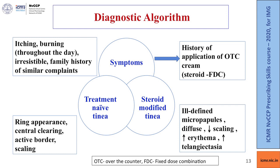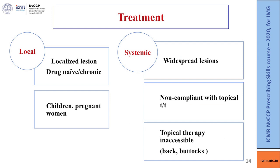If there is a history of application of an over-the-counter FDC containing steroid with antifungal drug, and lesions are ill-defined micropapules, diffuse with decreased scaling and increased erythema or telangiectasia, the diagnosis is steroid-modified tinea. In the present case it is tinea corporis. Treatment has two lines — local and systemic. Local application is preferred when the lesion is localized, drug-naive, or chronic, or when the patient is a child or pregnant woman.